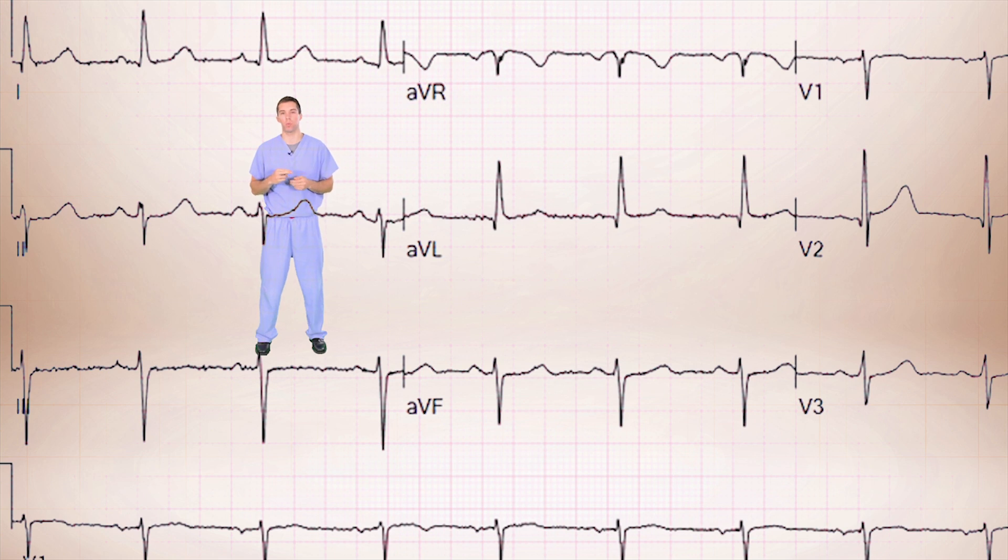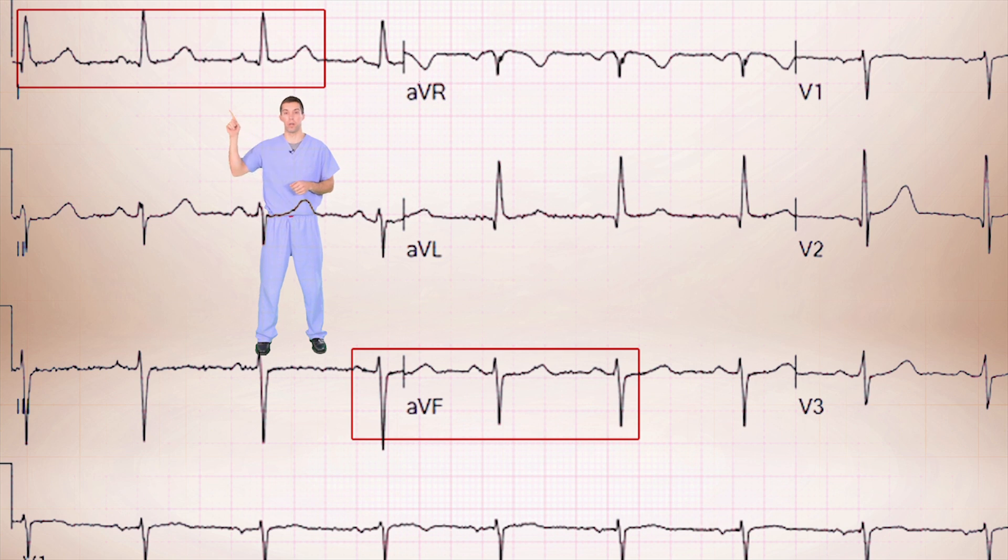Alright, which two leads were we looking at when we were using the quadrant method to determine axis? We were looking at lead 1 and AVF. We can see in this EKG that lead 1 is positive, meaning we have a tall R wave predominance. And AVF is negative, meaning there's a predominant S wave. Positive in 1, negative in AVF means left axis deviation.